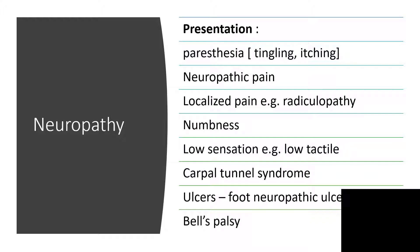Neuropathy will present like paresthesia, tingling, and itching. Neuropathic pain is a debilitating situation — I've seen patients craving anything that could relieve the pain, which is why some become opioid dependent and even addicted. There is the possibility of localized pain like radiculopathy, low sensation, low tactile sense perception, and compartmental syndrome. Neuropathic foot is also possible.